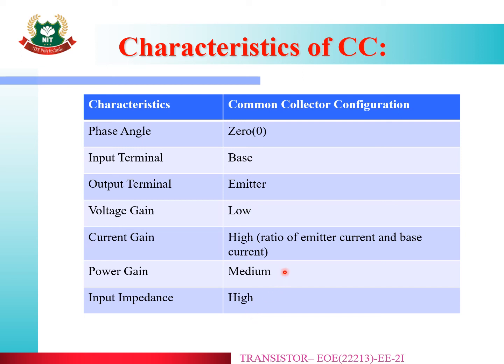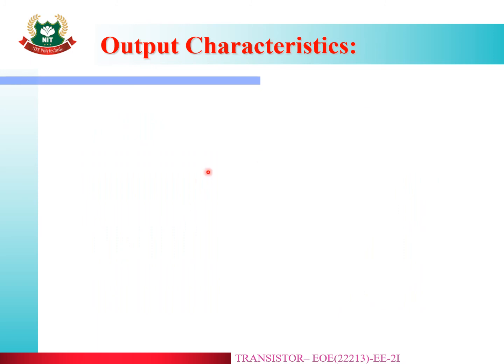These are the common characteristics of the Common Collector configuration. The input characteristics of the Common Collector are exactly similar to those of the Common Emitter configuration, so refer to the Common Emitter input characteristics to understand the working principle of the input side.